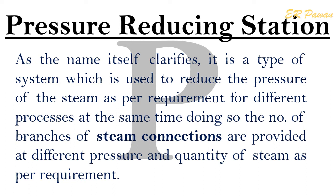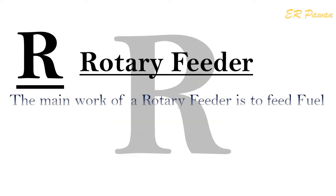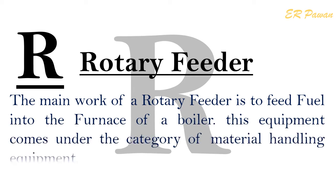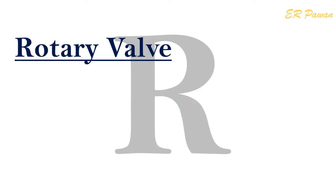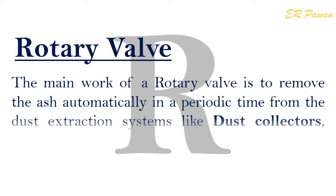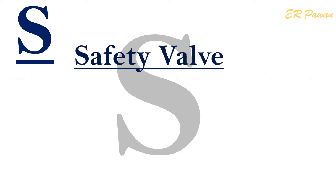R — Rotary Feeder: The main work of a rotary feeder is to feed fuel into the furnace of a boiler. This equipment comes under the category of material handling equipment. Rotary Valve: The main work of a rotary valve is to remove ash automatically at periodic intervals from dust extraction systems like dust collectors, wet scrubbers, bag filters, and ash hoppers of furnaces.